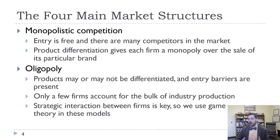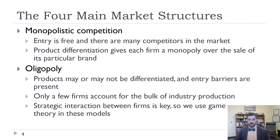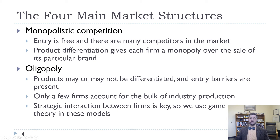A lot of our models will have two firms because that's easier to model, but in real life it's going to be more like three, four, five, up to ten firms in an oligopoly. The real difference in an oligopoly, as opposed to all these other markets, is that the strategic interaction between firms is really important. It's going to have very important effects for pricing decisions, output decisions, advertising, and market entry.